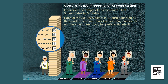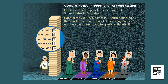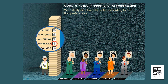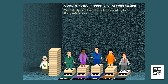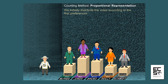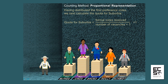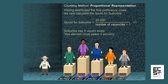Let's see an example of this system to elect three candidates in Suburbia. Each of the 20,000 electors in Suburbia marked all their preferences on a ballot paper using consecutive numbers, as done in any full preferential election. We initially distribute the votes according to the first preferences. Having distributed the first preference votes, we next calculate the quota for Suburbia. All of Suburbia's 20,000 voters have voted correctly, and Suburbia has three vacant seats — this election must have three winners.